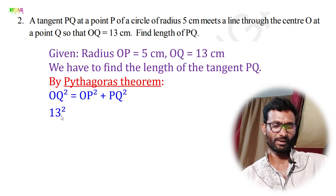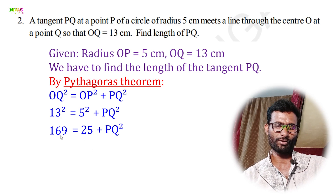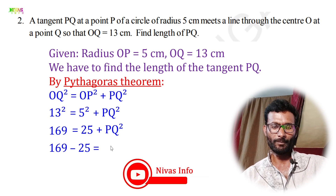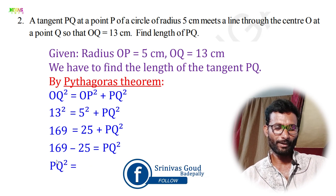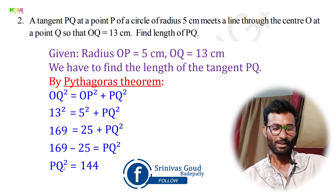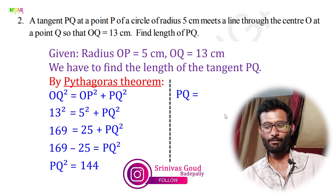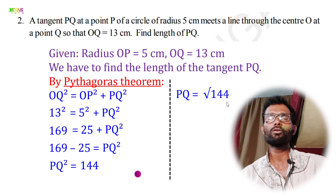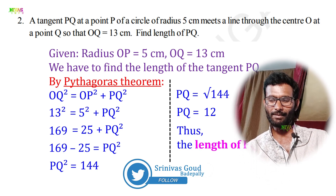So 13² = 5² + PQ². That gives 169 = 25 + PQ². Transposing: PQ² = 169 − 25 = 144. Therefore PQ = 12 centimeters. Thus the length of PQ is 12 centimeters.